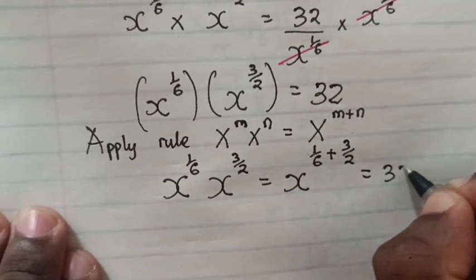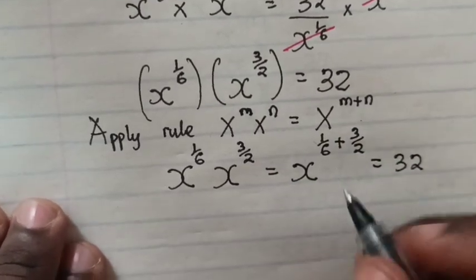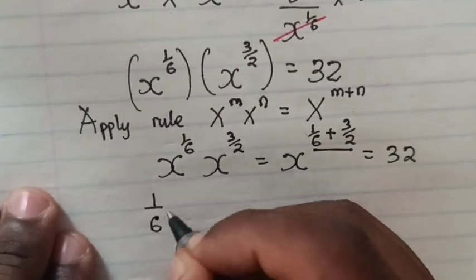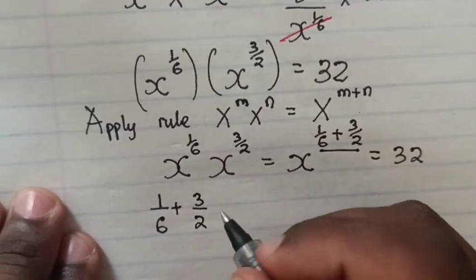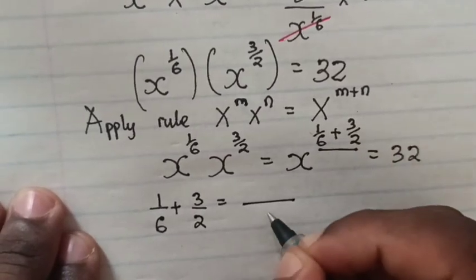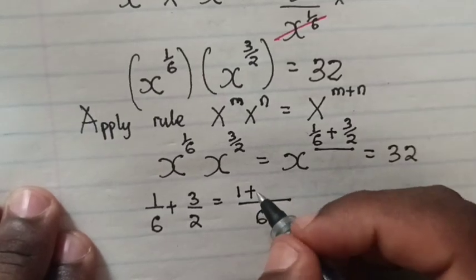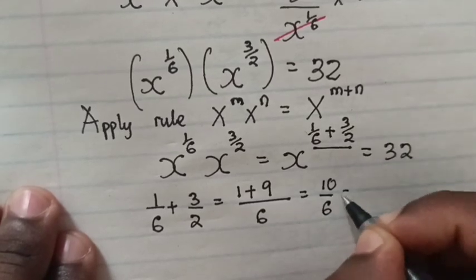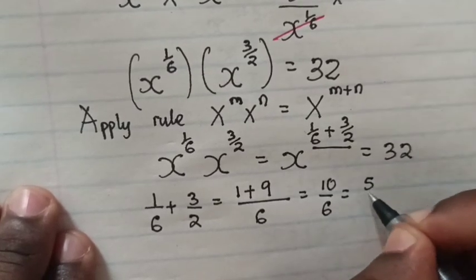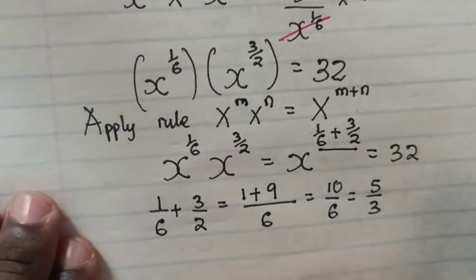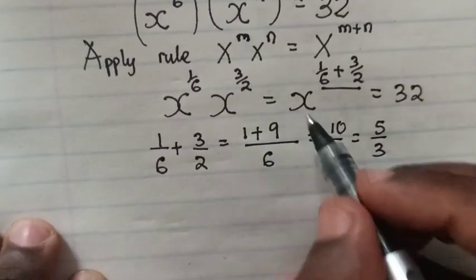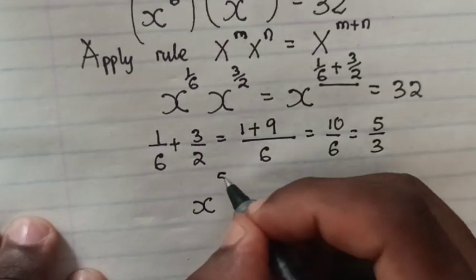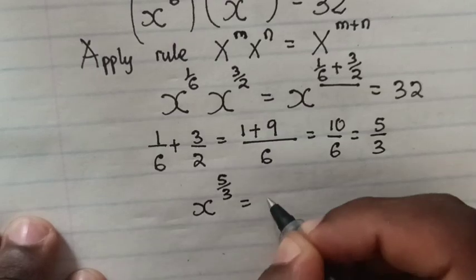We add the fractions: 1 over 6 plus 3 over 2. The common denominator is 6, so the numerator is 1 plus 9, which equals 10 over 6, which simplifies to 5 over 3. So our equation becomes x power of 5 over 3 is equals to 32.